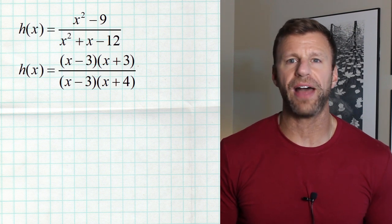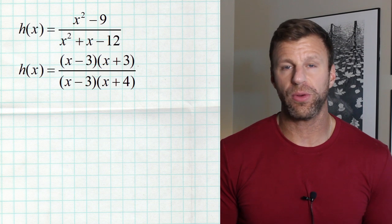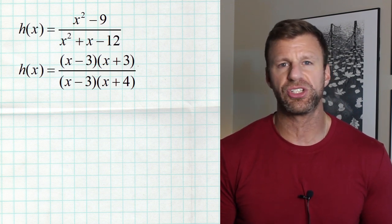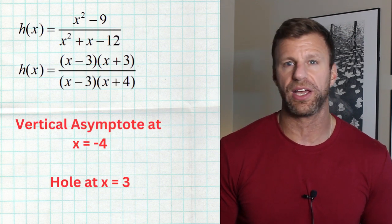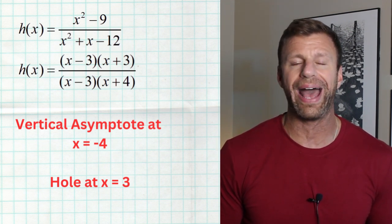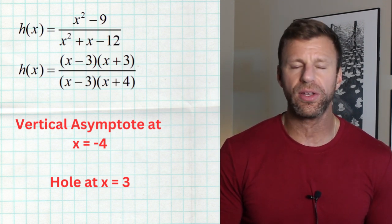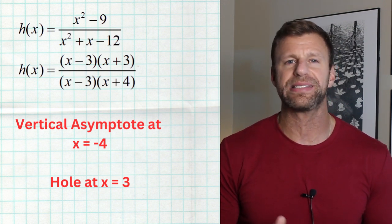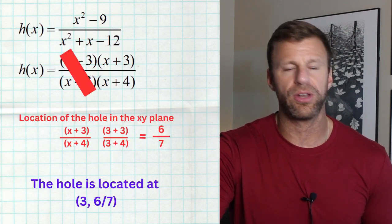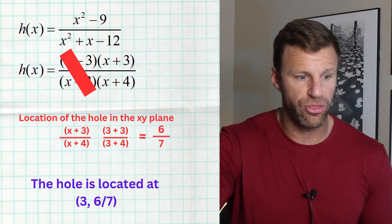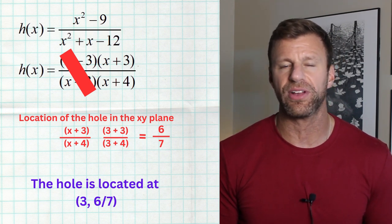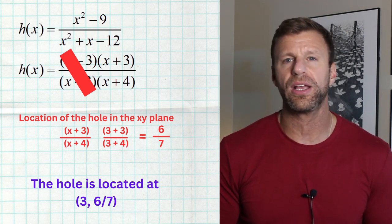In the next example, we have standard form and factored form, and we see two values where there's going to be nothingness: three and negative four. Because negative four makes only the denominator zero — there's no shared factor in the numerator — we have a vertical asymptote at x equals negative four. Then we see x minus three is a shared factor between both the numerator and denominator, producing a hole at x equals three. To find the y value of that hole, use the cover-up method: cover up the two factors that created the hole, then plug three into what's left over. In the numerator, three plus three; in the denominator, three plus four — that gives us 6/7. So the hole is located at (3, 6/7).